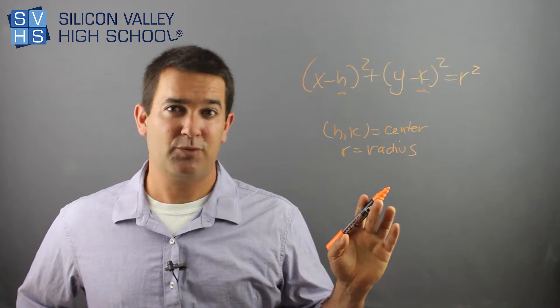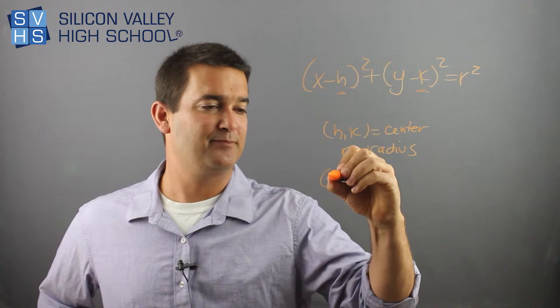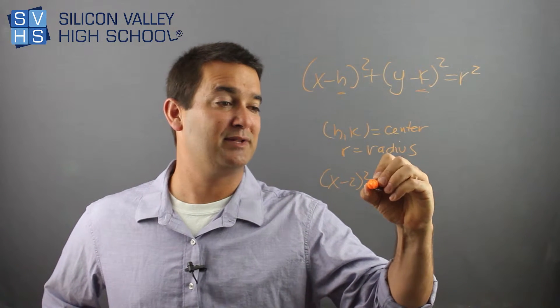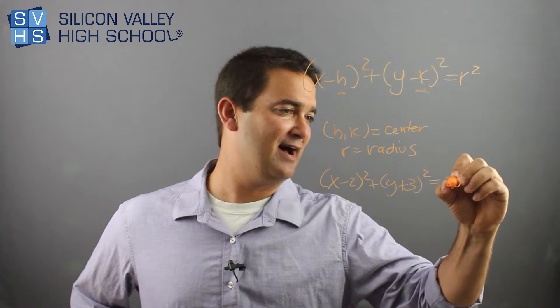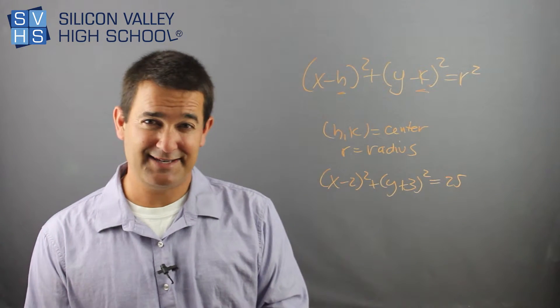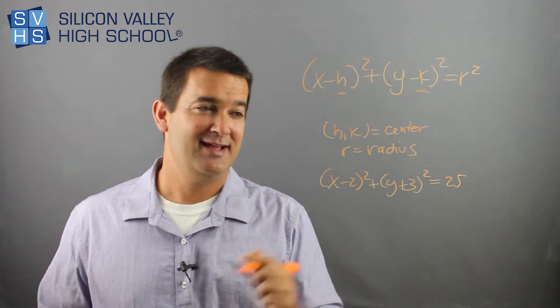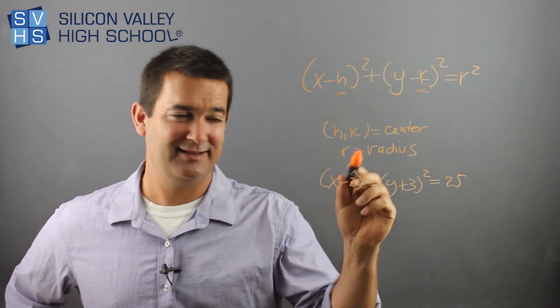So one really easy kind of typical problem is they'll give you a formula. They'll be like, x minus 2 squared plus y plus 3 squared equals 25. And they'll say, find the center and the radius of this circle. It's kind of just a hand me, like a freebie.